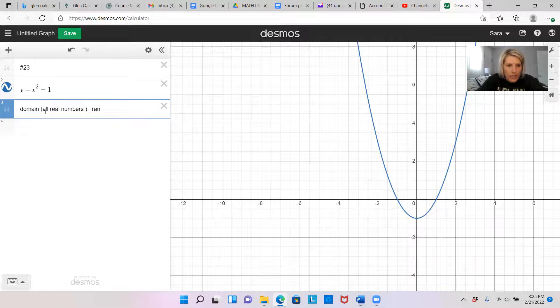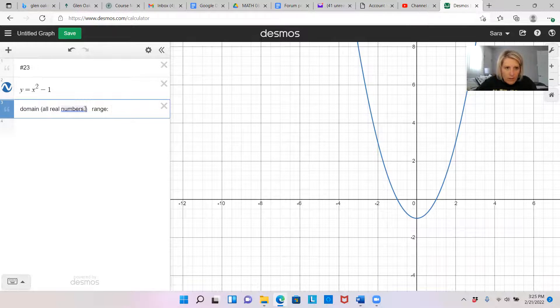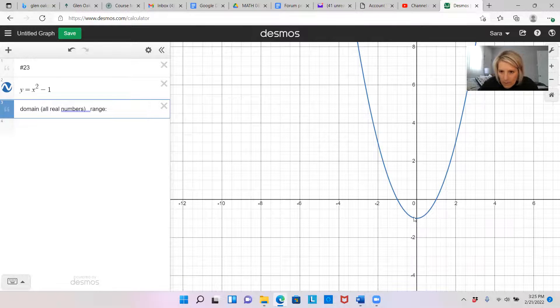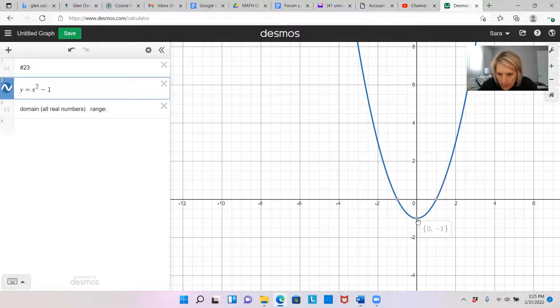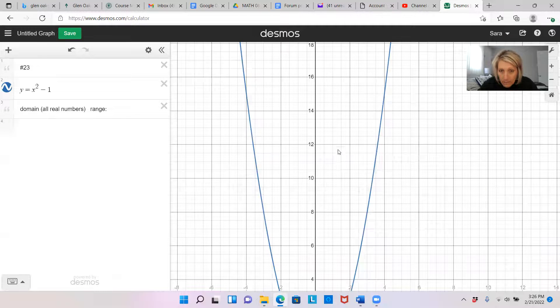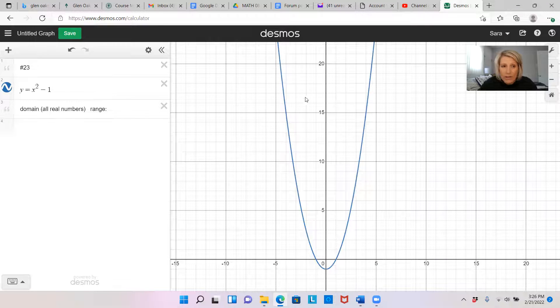And then my range is going to be, what is my smallest number it can be up to my largest. So the smallest, I'm just going to click and it looks like the smallest is right here. And it goes by your y value. So the smallest it gets is a negative one. And it looks like it's pretty much limitless. It can go up to infinity.